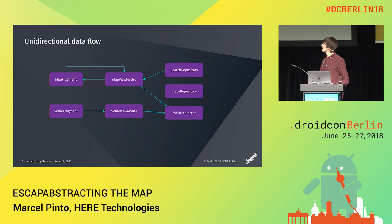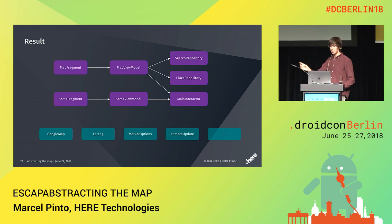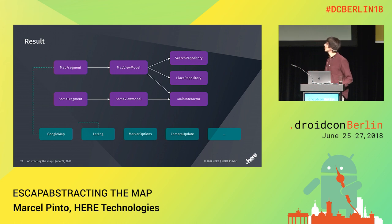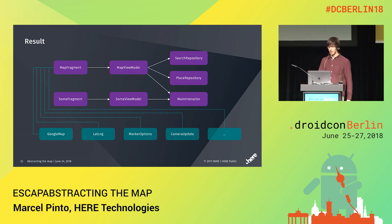Let's look at the result of all this. Remember at the beginning we had all the map classes going everywhere. Right now, after applying these concepts, we see that all the classes are only consolidated into the map fragment. The rest of our application is agnostic — it's map agnostic. They don't know whether we are using Google Maps, HERE Maps, or whatever. It's only the map fragment that knows how to represent it. And actually, then we could just swap this implementation.